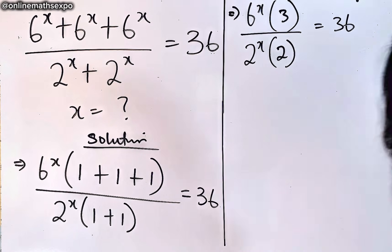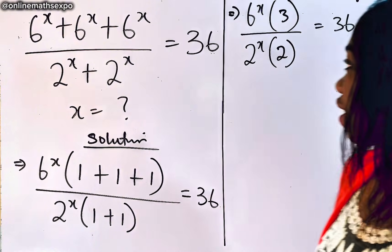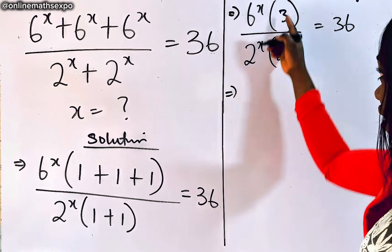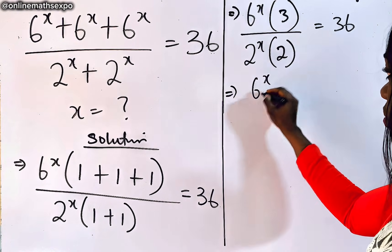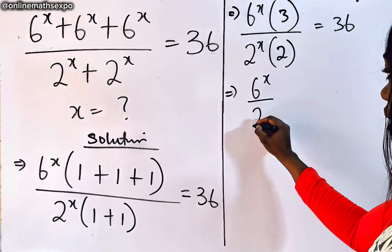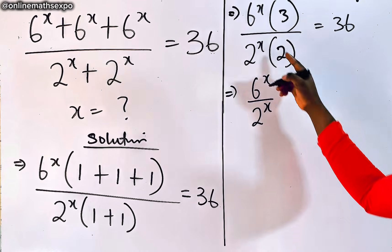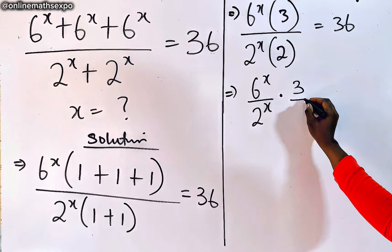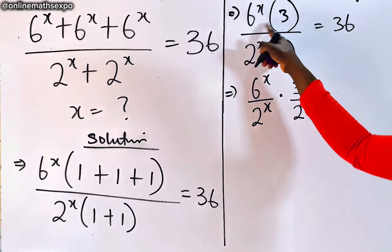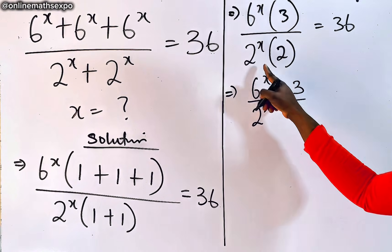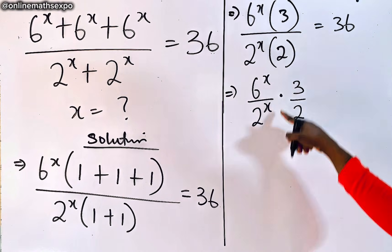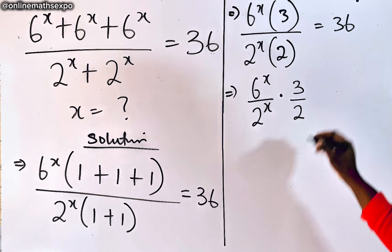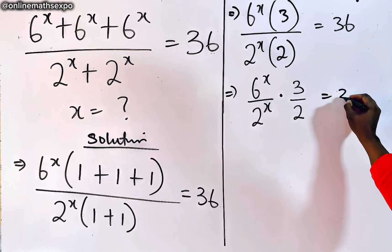What we need to do is rewrite this to be 6 to the x-power divided by 2 to the x-power, then multiply it by 3 divided by 2. Remember that this is multiplying. So you can rewrite this in this form — you've not changed anything — and this is equal to 36.